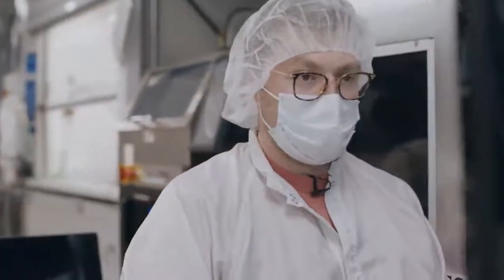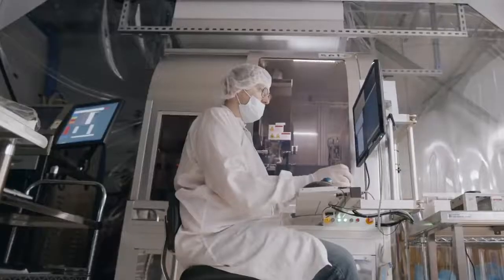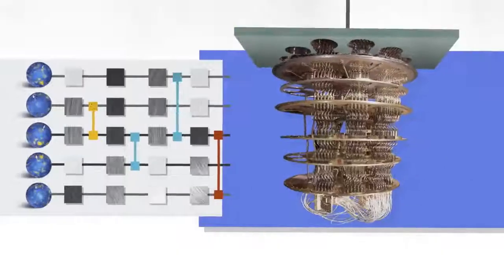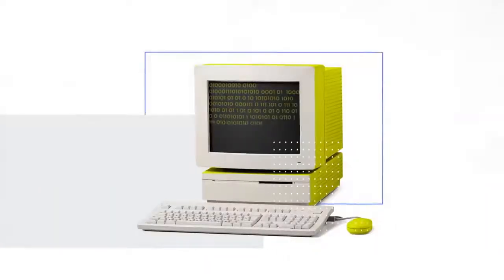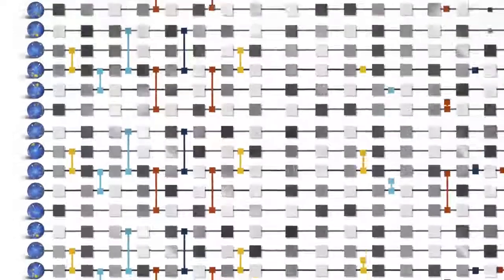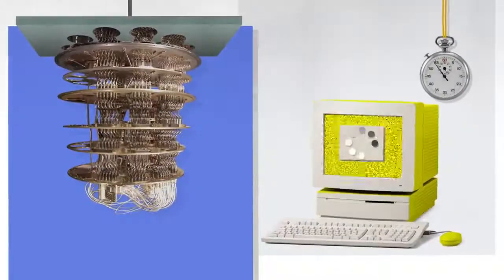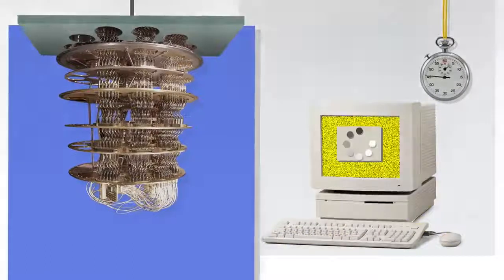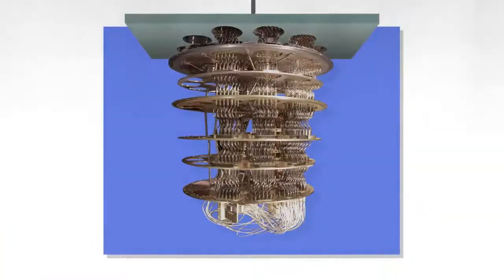The nice thing about quantum supremacy is that it is a very well-defined engineering milestone. In a nutshell, what we're trying to do is show that experimental quantum computers can surpass the best supercomputers in the world. To actually demonstrate quantum supremacy we have three steps: first, pick a circuit; second, run it on the quantum computer; third, simulate what the quantum computer is doing on a classical computer. We gradually increase the complexity of that circuit, and at some point it becomes completely impossible for the classical computer to keep up. Then we say we've achieved quantum supremacy.